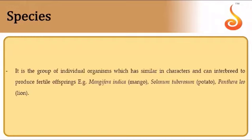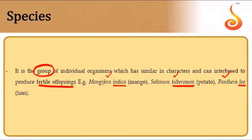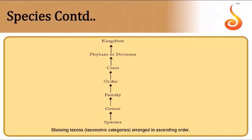A species is defined as a group of individual organisms capable of interbreeding and producing fertile offspring. Examples: Mangifera indica (indica is the species), Solanum tuberosum (tuberosum is the species for potato), and Panthera leo (leo is the species for lion). The second name is the species epithet or specific name and always starts with a small letter. The taxonomic hierarchy starts with species as the lowest rung and kingdom as the highest.